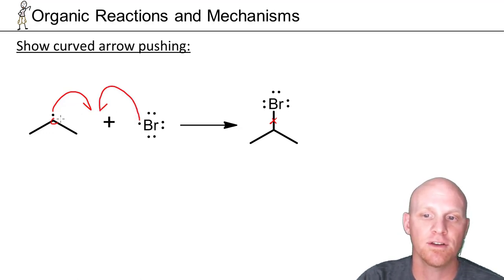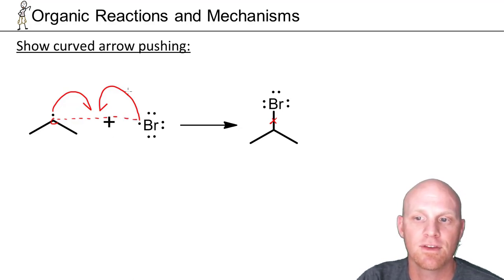This dashed line is not necessary. Some professors actually prefer that you draw it, but it's not necessary. It just shows that we're creating this new bond between the carbon and the bromine, and these half-headed arrows show the movement of one electron each to form that new bond.